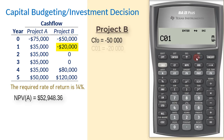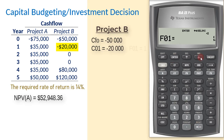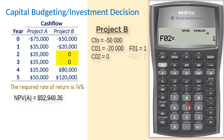C01 will be negative $20,000, enter, scroll down. F01 is 1, scroll down. C02 will be 0, enter, and when you scroll down to F02, we enter 2 for the frequency, since we have 2 zeros back to back. Enter, scroll down.